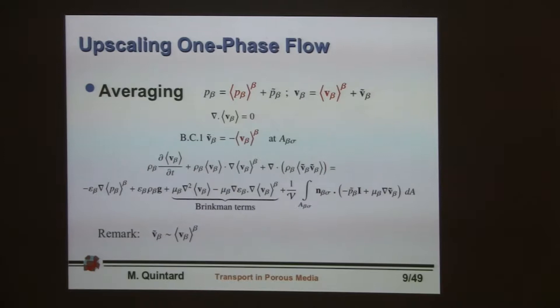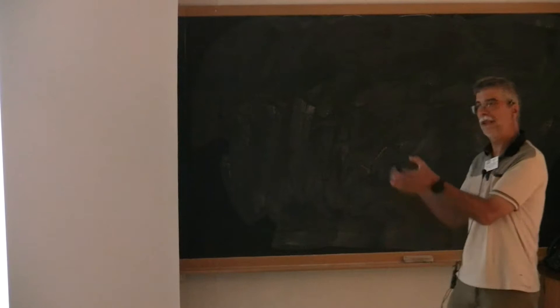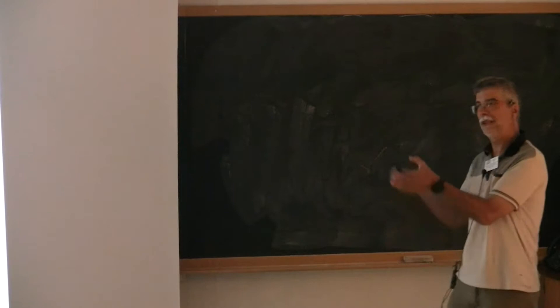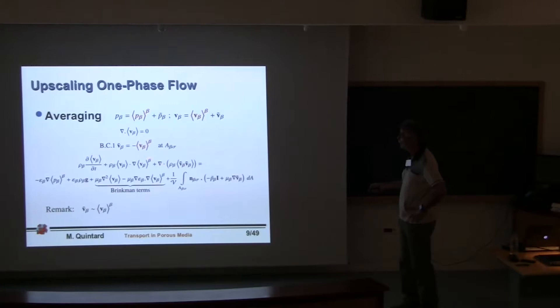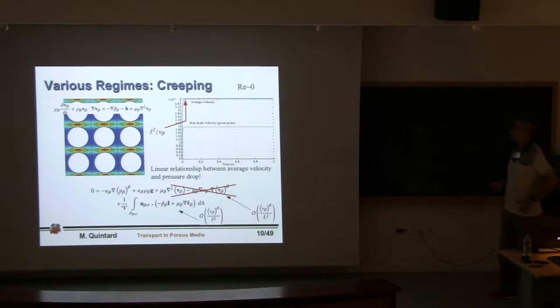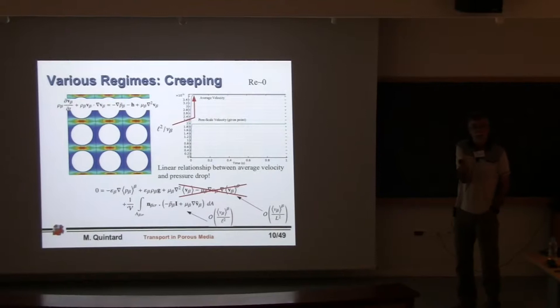There are many terms in the candidate macroscale equation. Some are macroscale terms; others are not closed. Using order-of-magnitude estimates becomes simpler by looking at the phenomenology when solving the local problem. The problem for the pressure deviation can be written with H as a constant. Looking at the velocity field for a porous medium containing several unit cells — a periodic cell — if the macroscale pressure gradient is constant, after a while the average velocity will be constant.